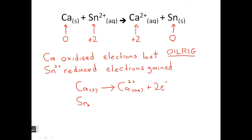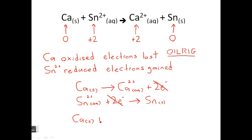And for Sn²⁺ — it's been reduced, so it's gained electrons. How many has it gained? It's gone from plus 2 to zero, so it's gained two electrons. We end up with Sn as a solid. Just like the previous example, we can cancel the electrons out and rewrite it as the net ionic equation: Ca(s) plus Sn²⁺(aq) gives Ca²⁺(aq) plus Sn(s). And that matches our original equation at the top.